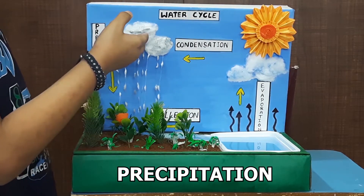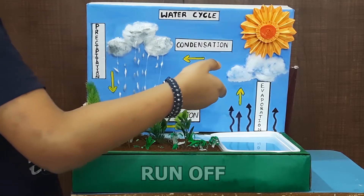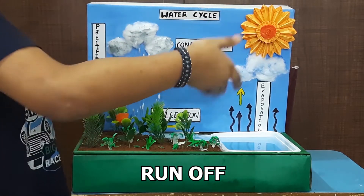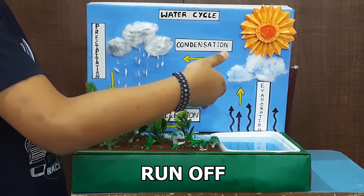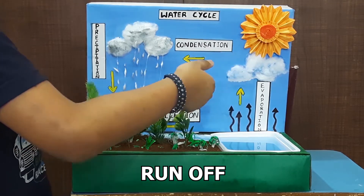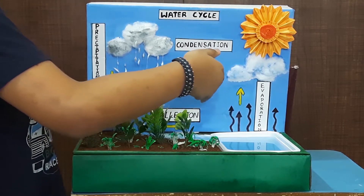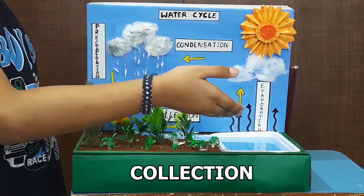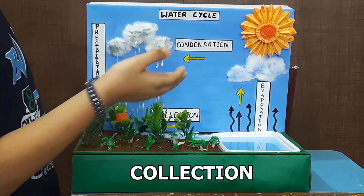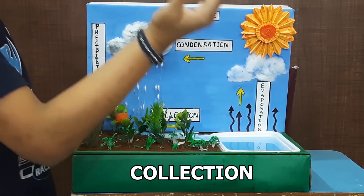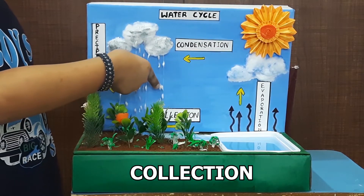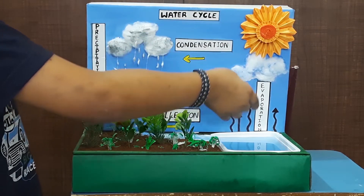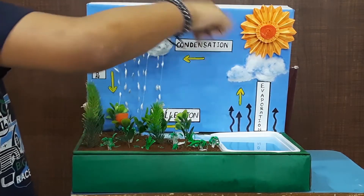Some of the rainwater may seep through the surface of the earth to become groundwater. The remaining water on the earth's surface flows into lakes, rivers, and is carried back to oceans. This is known as collection. From here, the water cycle begins again.